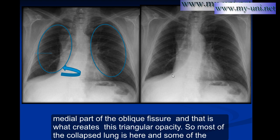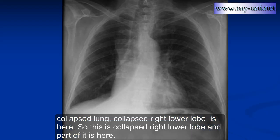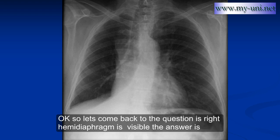Most of the collapsed lung is here, and some collapsed lung is here. This is the collapsed right lower lobe. This is the superior vena cava, and some part of the right heart border is here. Let's come back to the question: is the right hemidiaphragm really visible? The answer is no.